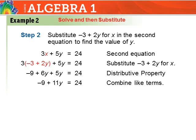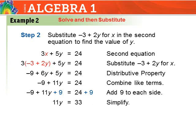Collecting like terms: 6y plus 5y equals 11y, so negative 9 plus 11y equals 24. Adding 9 to both sides gives 11y equals 33. Dividing both sides by 11 gives y equals 3.